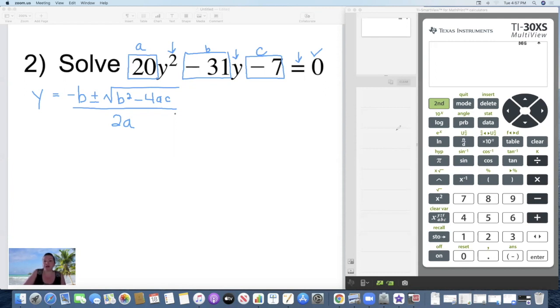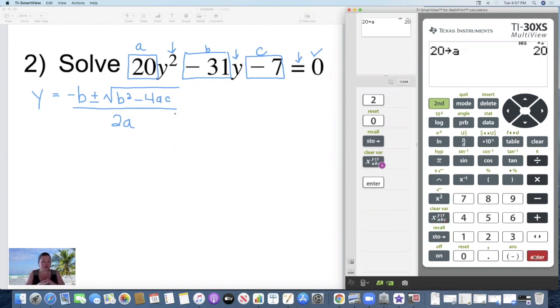So first I'm going to program in 20 for a. The way you do that is you just type in the number 20. You press the STO button. That stands for store. We're going to store 20 and we want to store it as the a value. So I'm going to come right above the store button and I'm going to press this variable button. See how it has different letters on it? Well, depending on the number of times you hit it, that'll be the letter you're storing. So I'm going to keep hitting it until mine says a, and then I'm going to press enter. I've just stored 20 as my a.